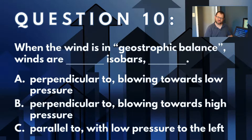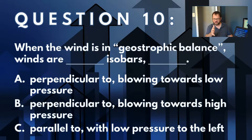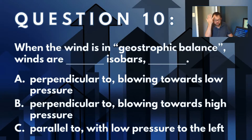No fooling you, it's answer C. The cool thing about geostrophic winds is that they're just parallel to the isobars. You can just look at a map that has isobars drawn on it — contours of pressure — and you already know what the winds are going to look like.